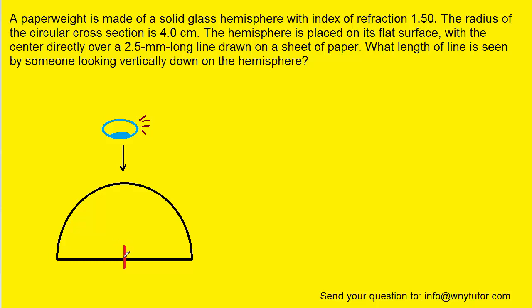And what we want to note is that light from this line is going to originate from the line, strike the spherical surface, and then refract and enter the eye of the observer.